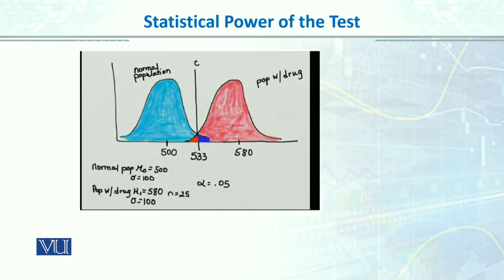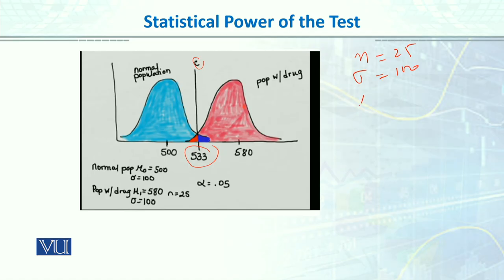Now let's see how we relate this to power. Our critical value is 533. The blue distribution represents the null hypothesis, and the red distribution represents the alternative hypothesis. A sample of 25 was collected after taking the drug, with a sample mean of 580. The power of the test is the probability of rejecting the null hypothesis when it is actually false. We draw the null hypothesis distribution first, then overlay the alternative hypothesis distribution in red.